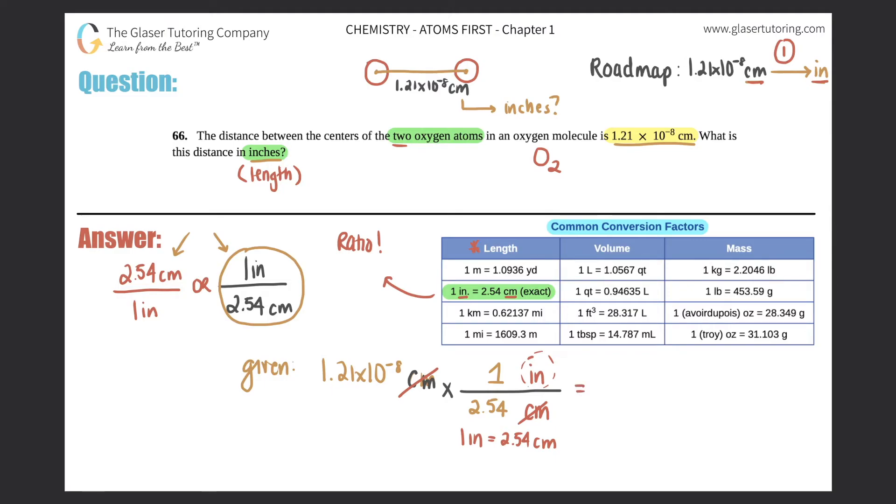So in this case, you literally multiply the top. You would multiply the bottom if there were multiple fractions. In this case, there's only one. So I'm just going to simplify it here. It would be 1.21 times 10 to the negative eighth times one is literally the same number. So 1.21 times 10 to the negative eighth divided by this number, the only number in the denominator. So 2.54. And now I will just do the division.